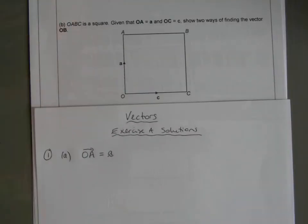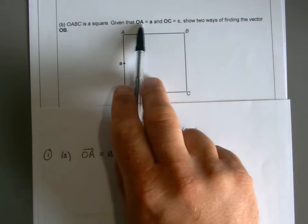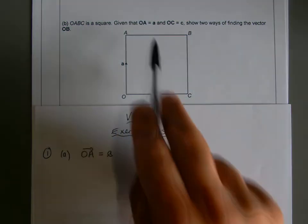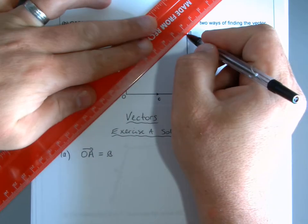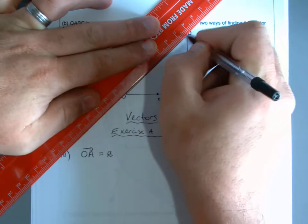So we've got then in part B, OABC is a square. Given that OA is little a and OC is little c, show two ways of finding the vector OB. So again, you'll notice OA is bolded, so that's the vector, and same with OC. And the little ones are bolded as well, but when we write it we're going to put an arrow above it.